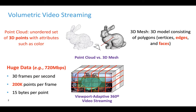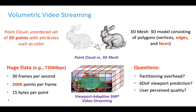One possible solution is viewport adaptive streaming, which has been explored in 360-degree video streaming. The key idea is to deliver mainly content in the user's viewport. However, there are several questions when applying it for volumetric video streaming — for example, partitioning overhead for enabling viewport adaptation and accurate prediction for 6 degrees of freedom viewport movement. In order to address the challenges of huge amounts of data for delivery, we took the following approach.